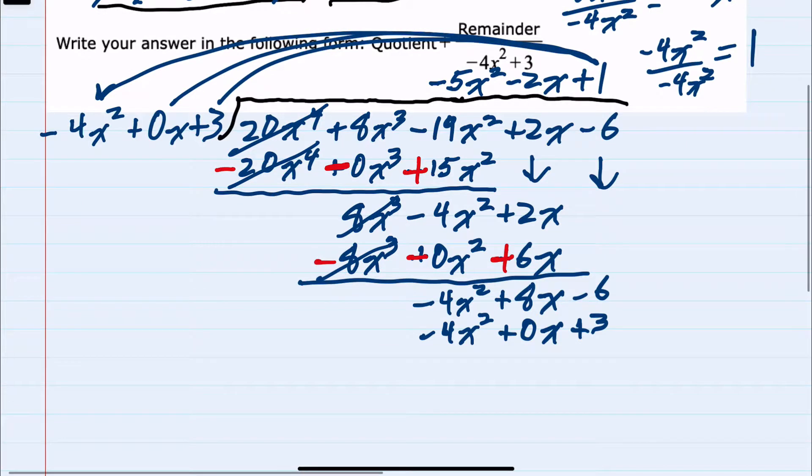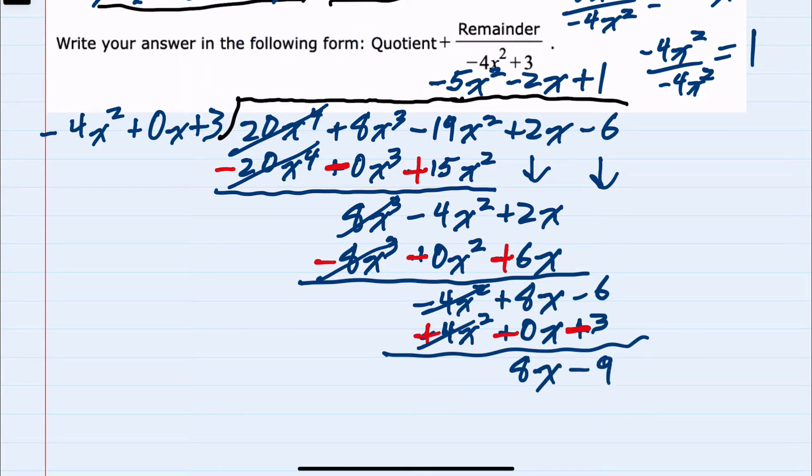Once again, I want to subtract. So I change the signs to add. Our first term cancels. 8x plus 0x is an 8x, minus 6 plus a negative 3 is a minus 9. And now that we have the quotient and the remainder,